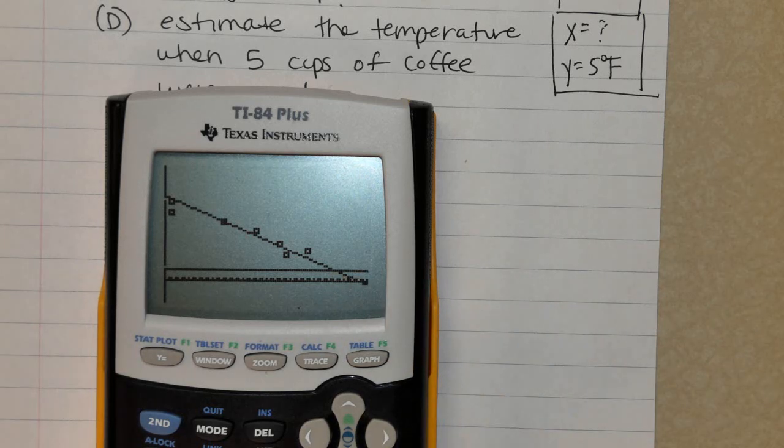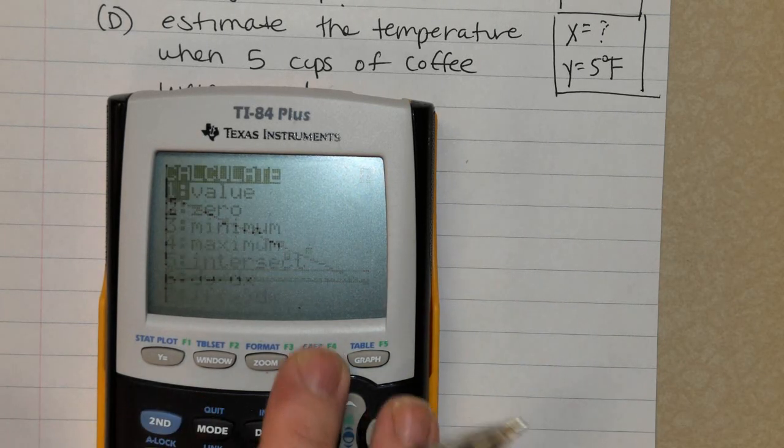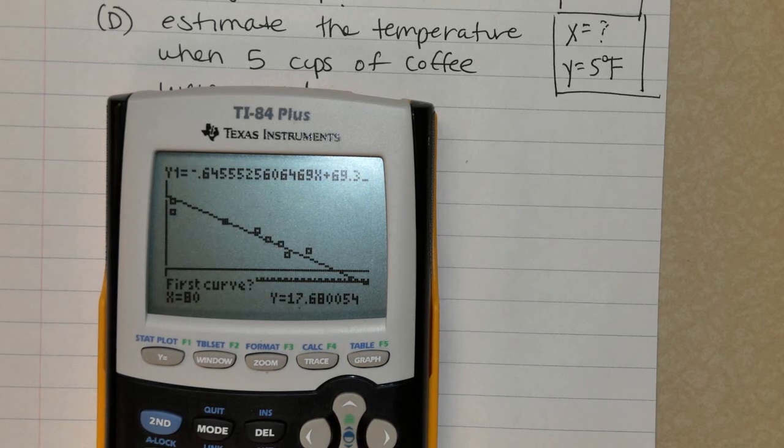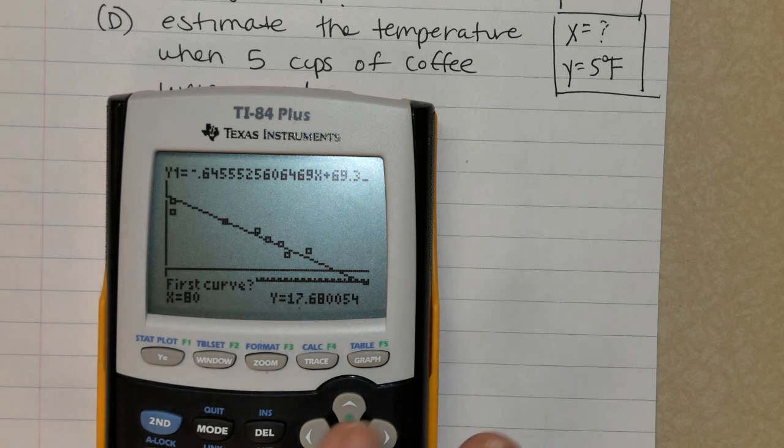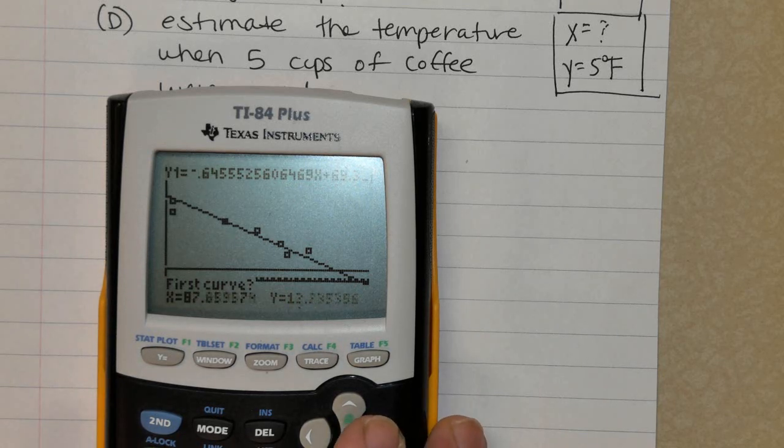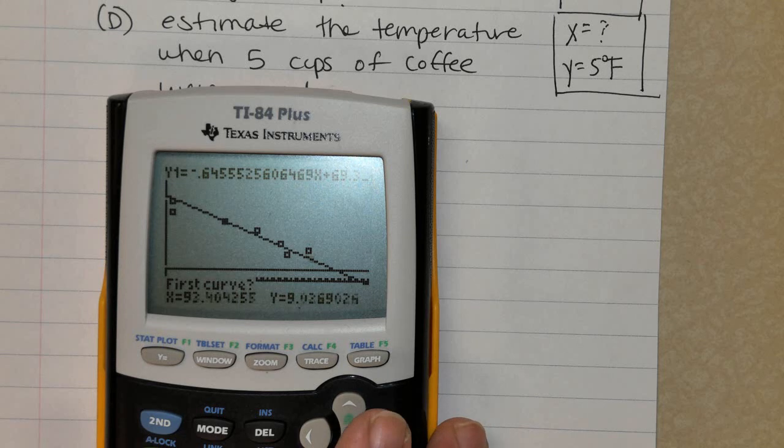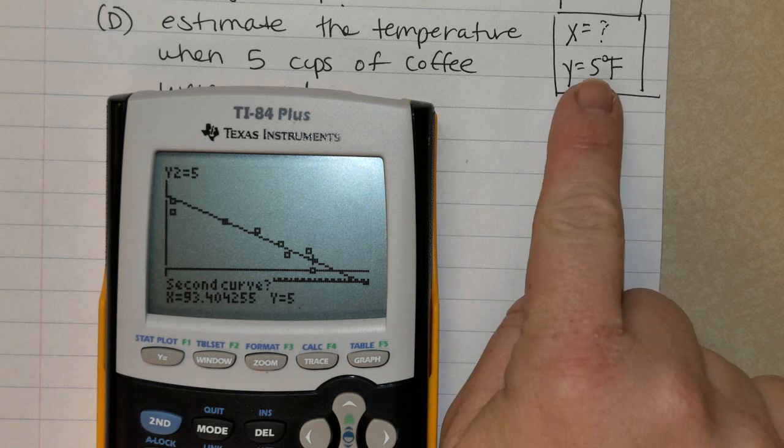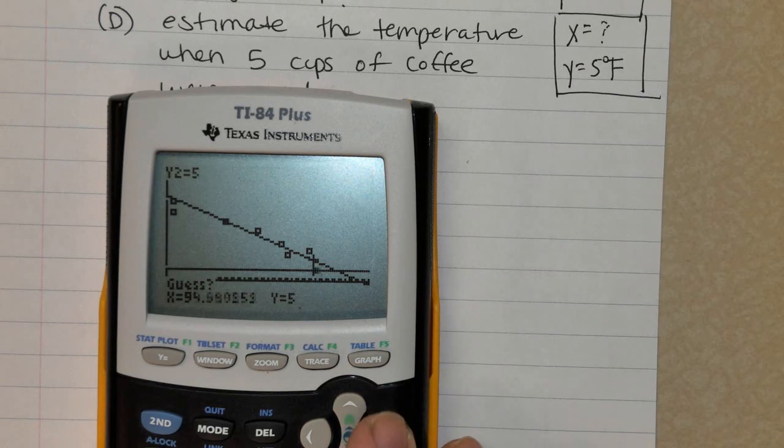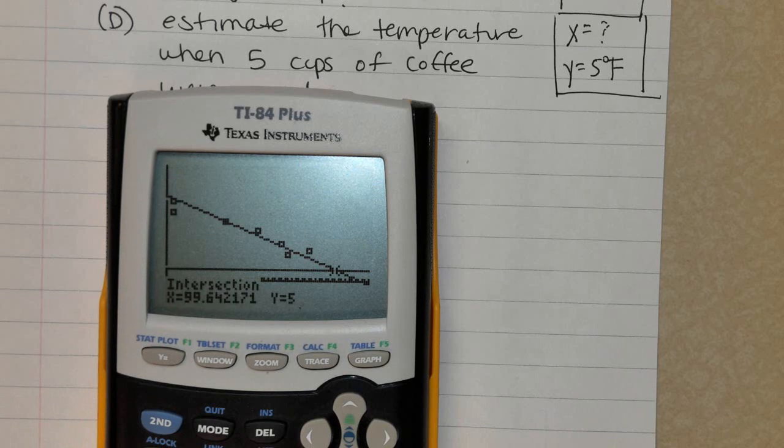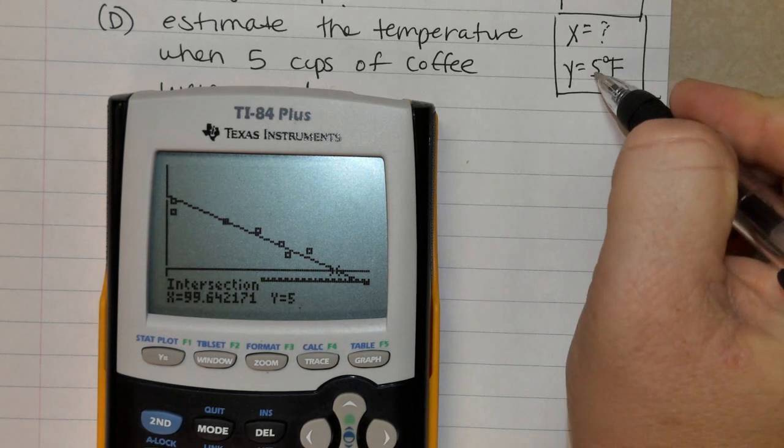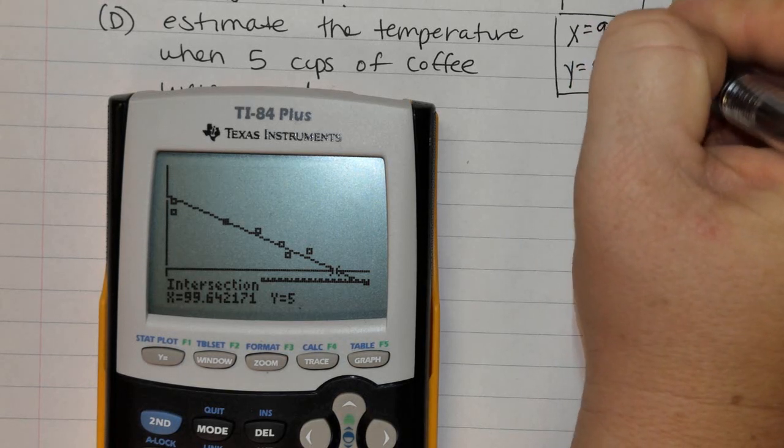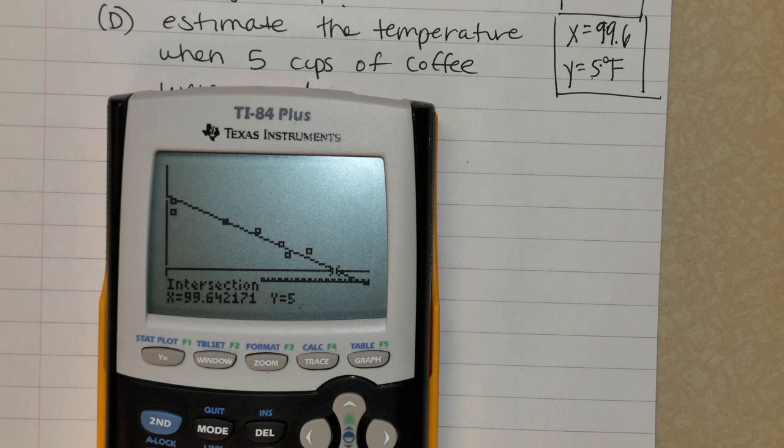Okay, now I can see where they intersect. So if I hit 2nd, trace, intersect, it's going to say 1st curve. 1st curve just means which equation do we plug in first, and it was the line of best fit. So I'm going to get close to where they intersect and press enter one time. The 2nd curve is just the 2nd equation, which is y equals 5. Press enter again. Go over the top over to the intersect, and now I can say when it is 5 degrees Fahrenheit outside, we can estimate that 100 cups of coffee will be sold.